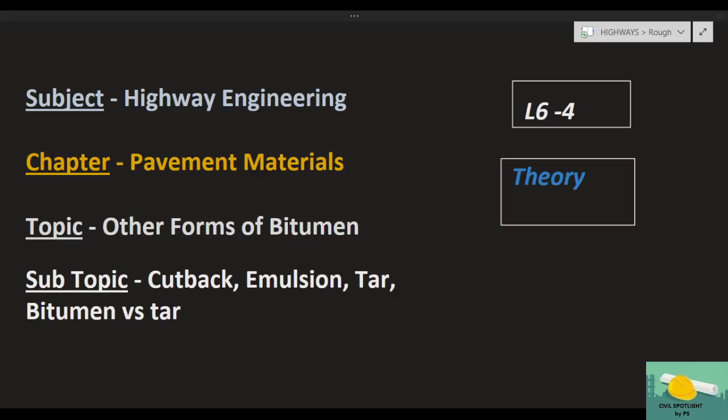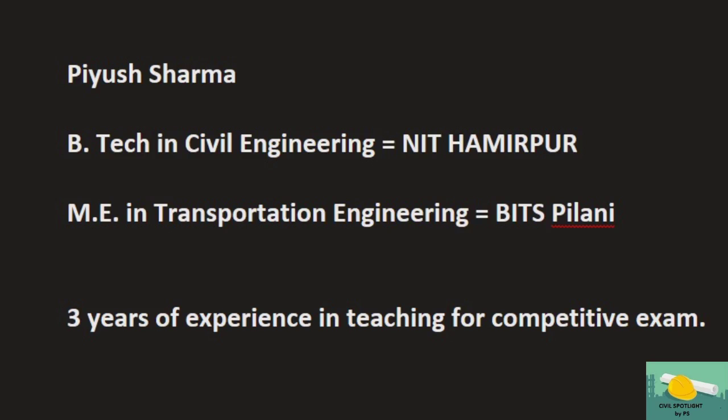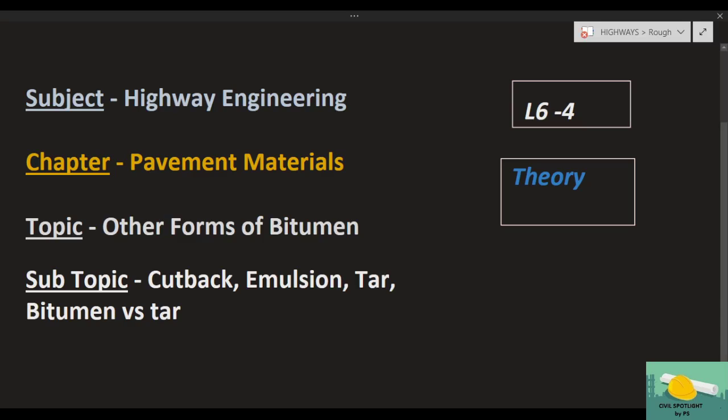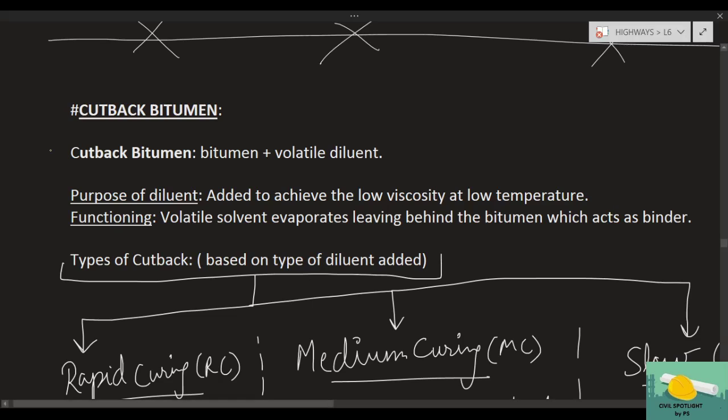Hello everyone, welcome back to the channel Civil Spotlight. Today we are going to discuss the other forms of bitumen: cutback, emulsion, and tar. This is lecture six, part four. Let's begin our lecture and start with cutback bitumen.